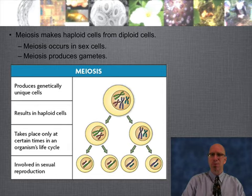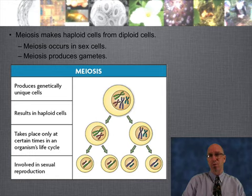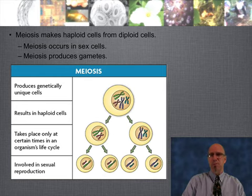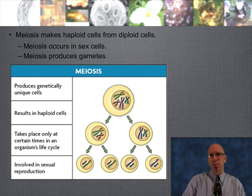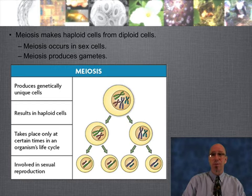Meiosis is different. Meiosis produces genetically unique cells and results in half the number of chromosomes in the cell. Looking at the picture, we start with four chromosomes, go through a couple of cell divisions, and wind up with four cells that have half the number of chromosomes. It's involved in sexual reproduction — those cells turn into sex cells with a haploid number, ready for sexual reproduction. So meiosis and chromosome number — I hope this gets you curious and you come back with some questions.